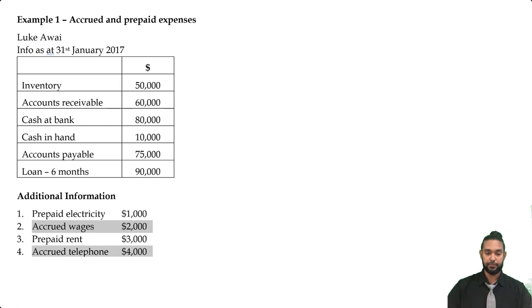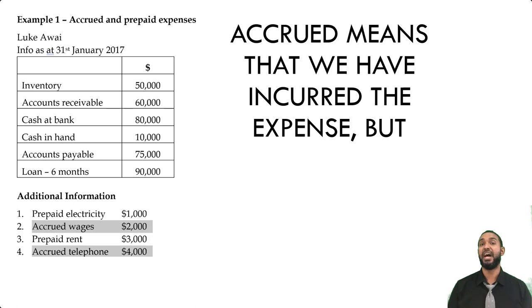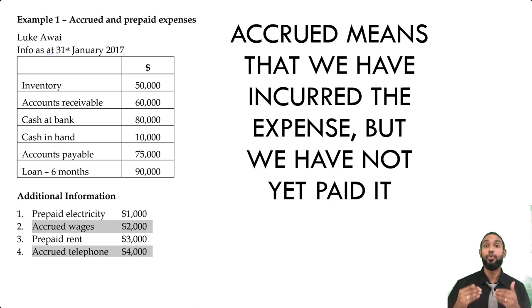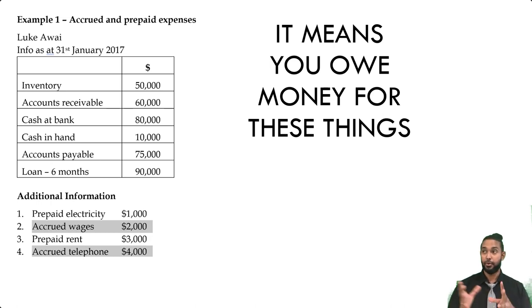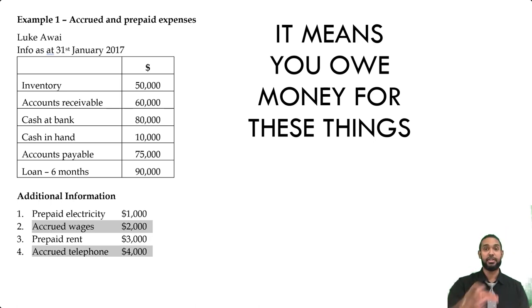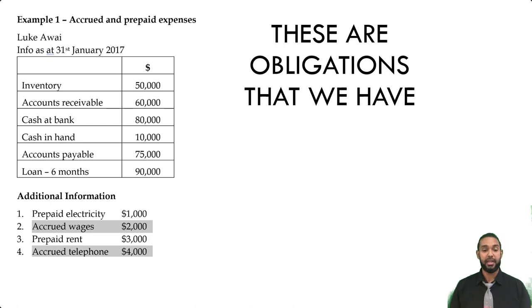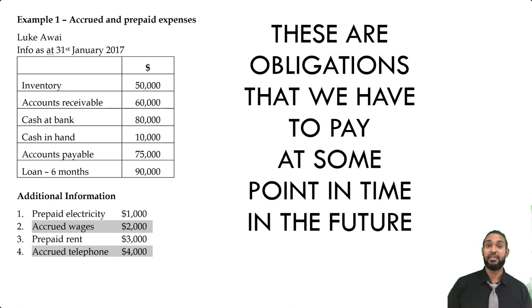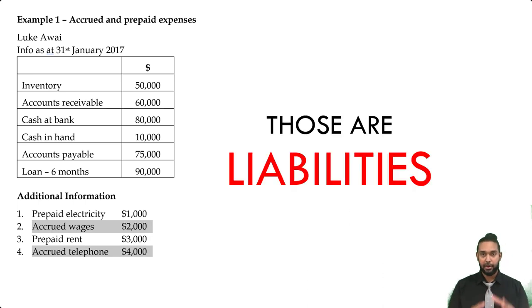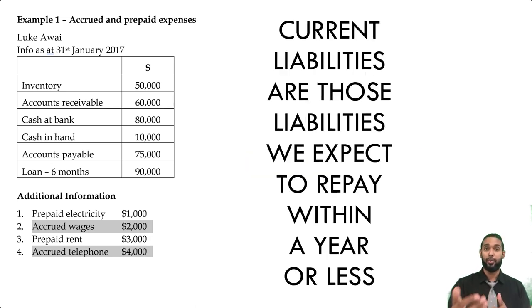Accrued wages and accrued telephone are both expenses we've incurred but not yet paid. Accrued means the expense has been incurred but not yet paid — like going to a restaurant, eating your food, and then getting the bill. You incurred the cost but haven't paid yet, making it a liability until you do. These are obligations we have to pay wages and telephone at some point in the future, and they're current because we'll most likely pay them within a month or two. Current liabilities are those we expect to repay within a year or less.